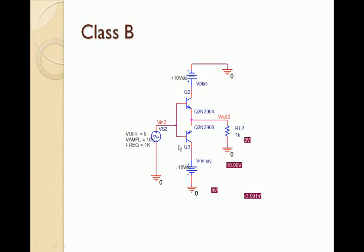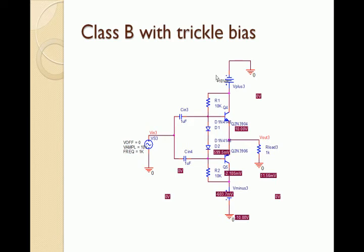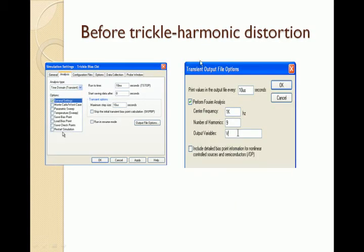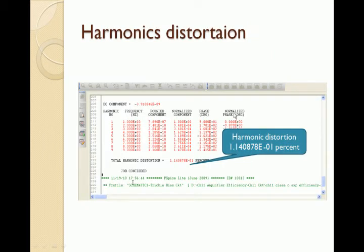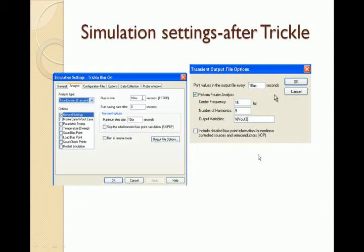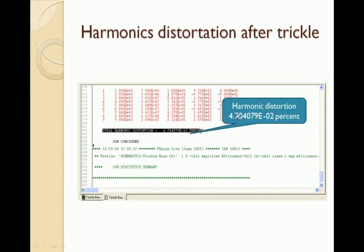In the Class B amplifier, the input is connected to a Darlington pair. Without the tickle circuit, this is the load with V plus. With the tickle bias circuit added, we calculate the harmonic distortion for 9 harmonics. It is a gradually decreasing sine wave; without tickle, the total harmonic distortion is 1.1408. After tickle, the V output for 9 sine waves is 4.7.